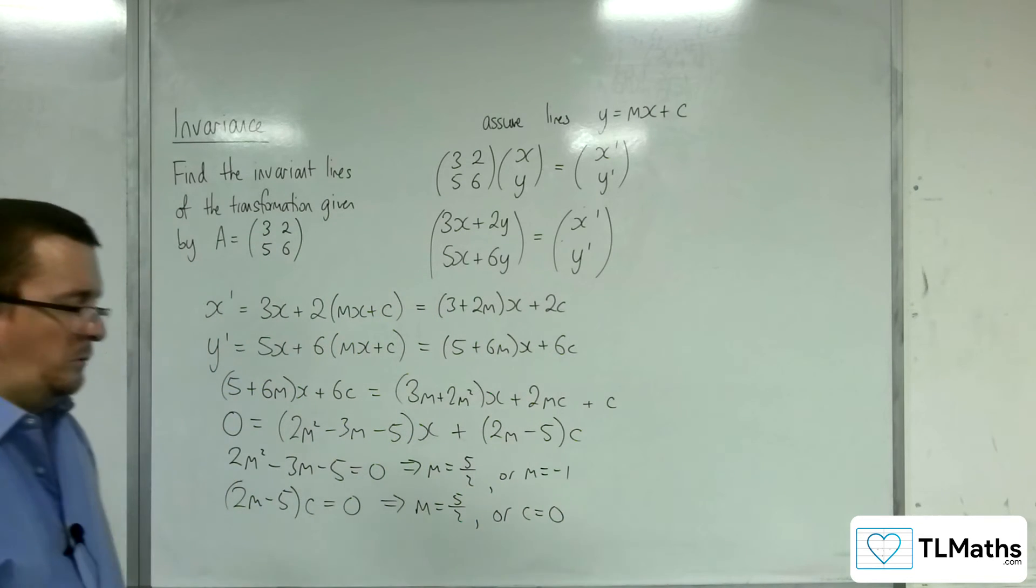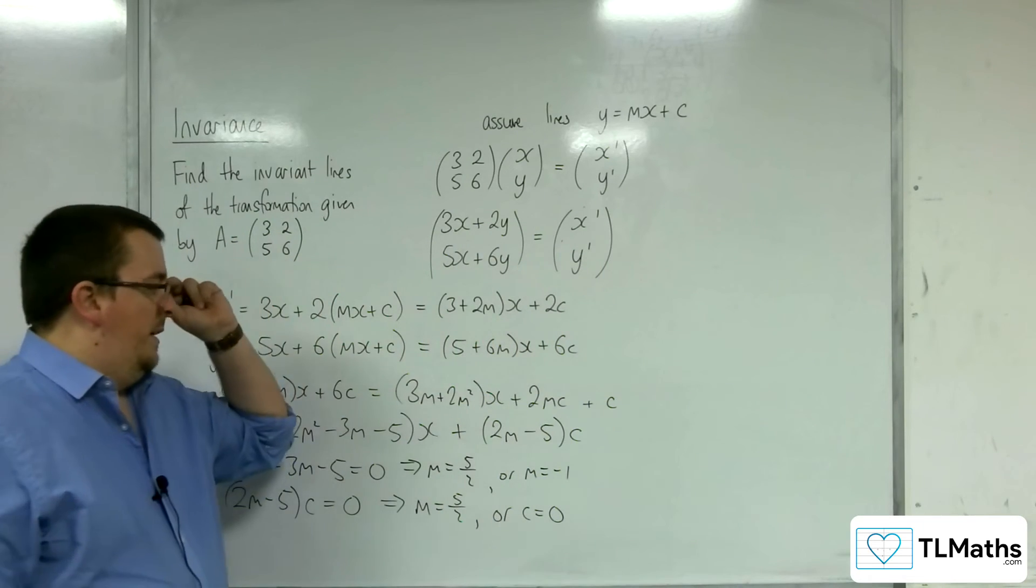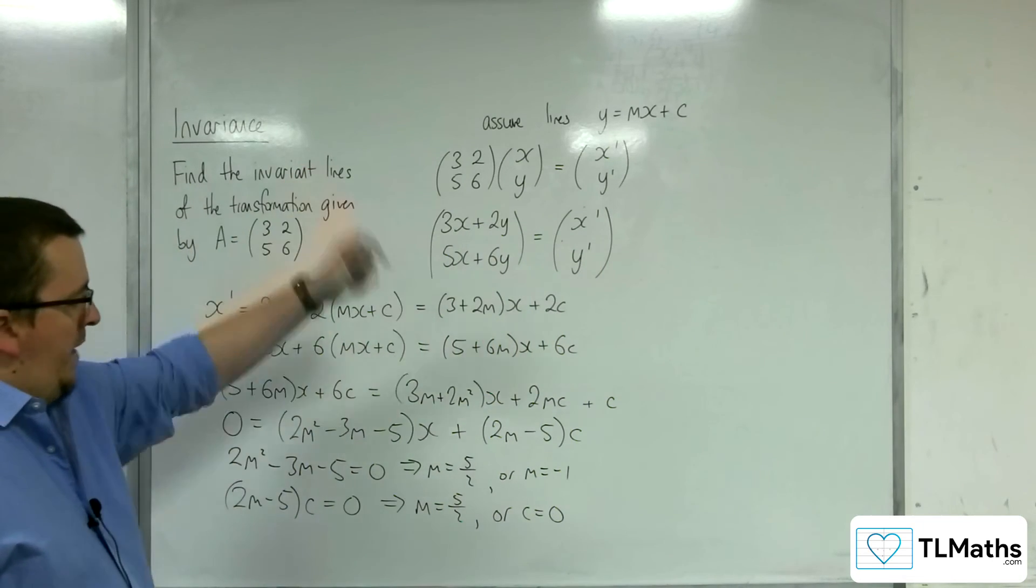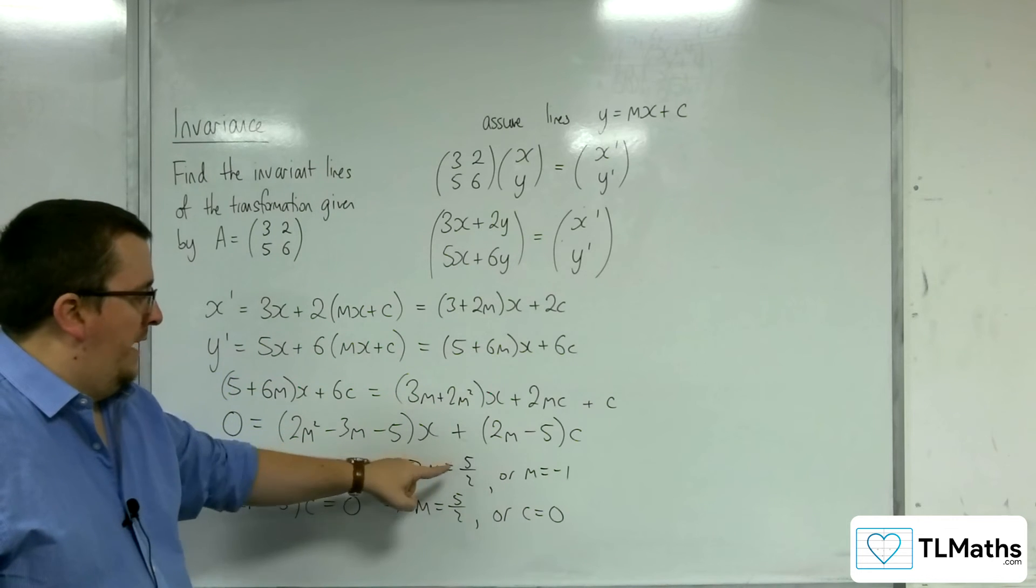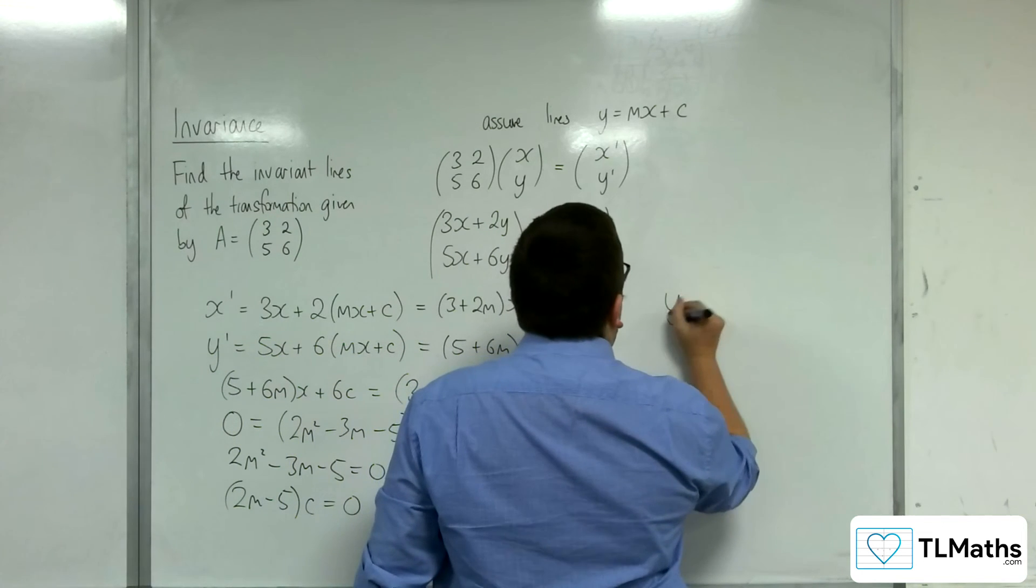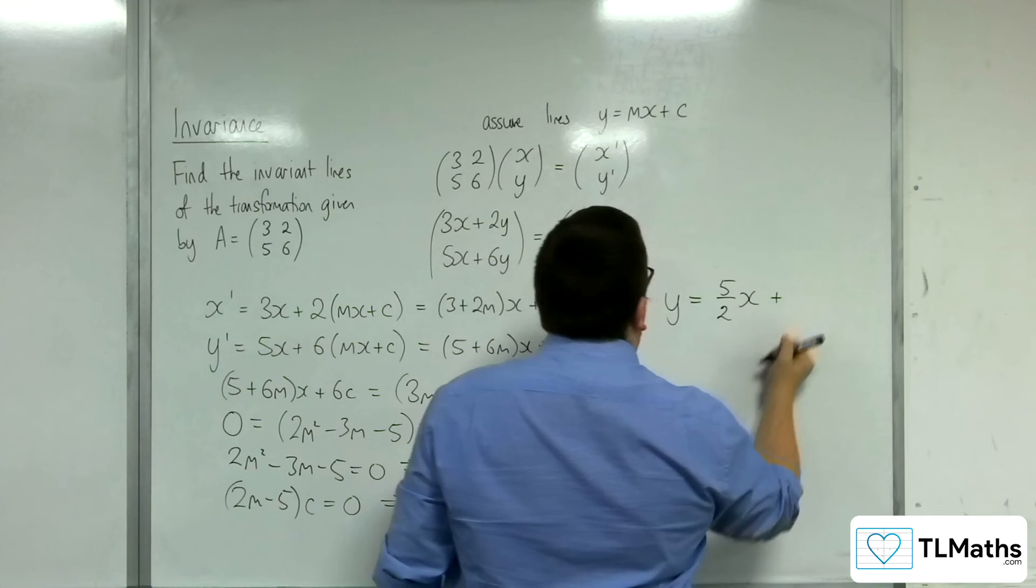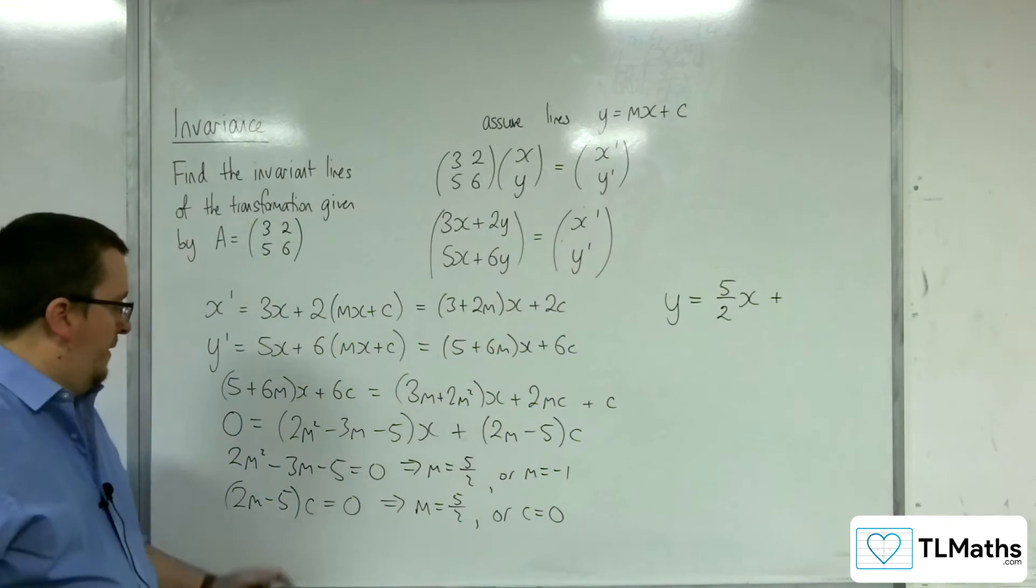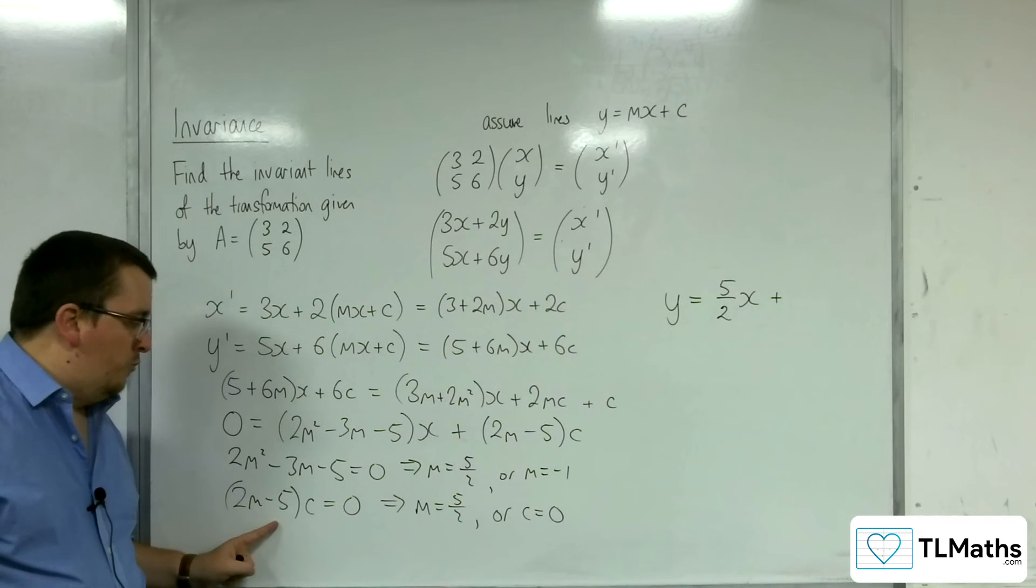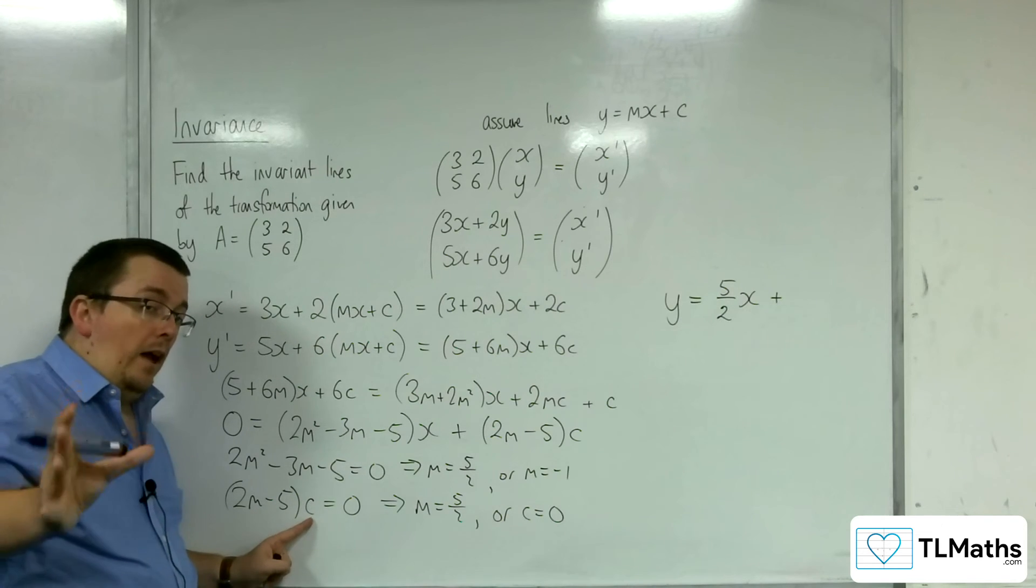Now, what this is actually telling you is that if m is 5 halves, then both this and this is 0. So y equals 5 halves x. Now, the thing about that is that because that bracket is 0 when m is 5 halves, c can be anything you like.